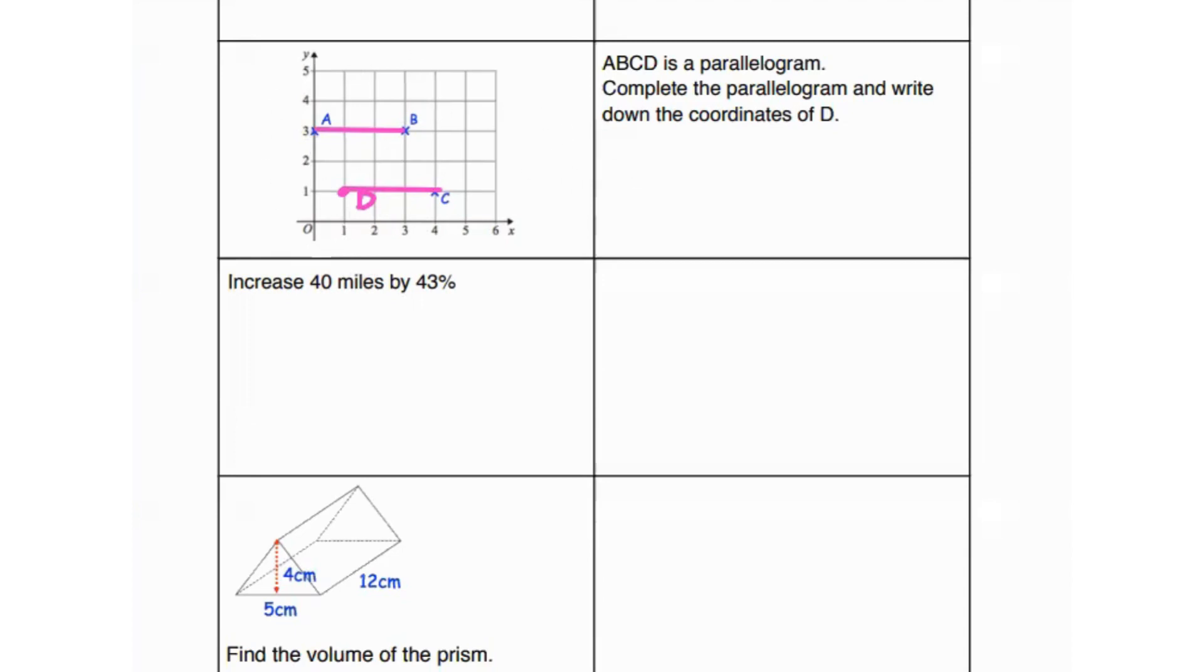If it was on the right side, then D would be over here, which would be incorrect. Hence the coordinates of D are going to be one, one.